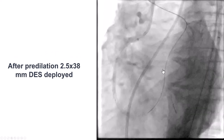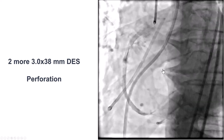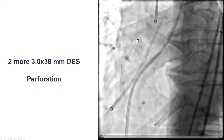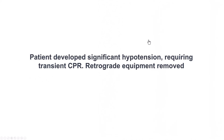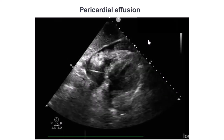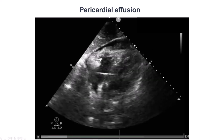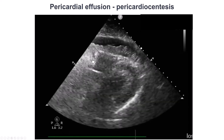We predilated and placed two drug-eluting stents. But at this point the patient had a hemodynamic collapse once again. We can see the staining seen before is getting worse, so there's probably a perforation of a small branch. Because of the hypotension, we had to perform transient CPR, and in the process we had to remove the retrograde equipment. An echocardiogram showed a pericardial effusion with some hematoma on the wall of the RV, likely due to that area of perforation. We performed pericardiocentesis and the patient's hemodynamics stabilized.